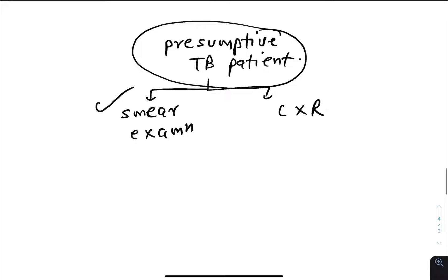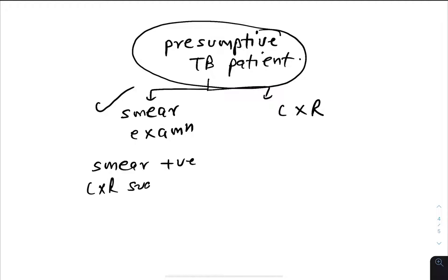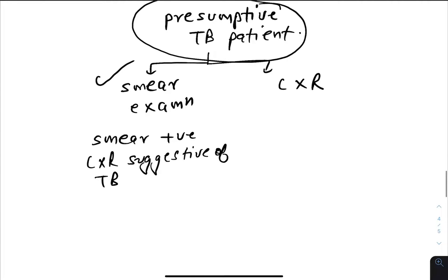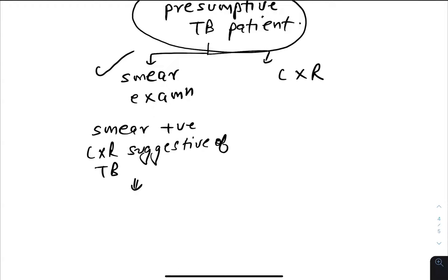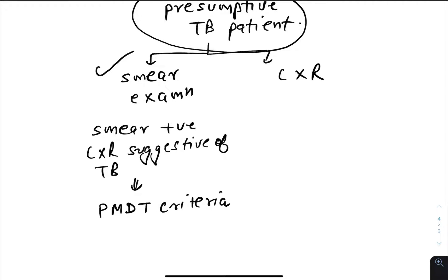The first probable is when the smear comes positive and the chest X-ray is suggestive of TB. In this scenario, you apply the PMDT criteria — Program Management of Drug Resistant TB.